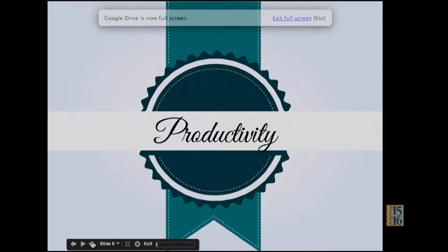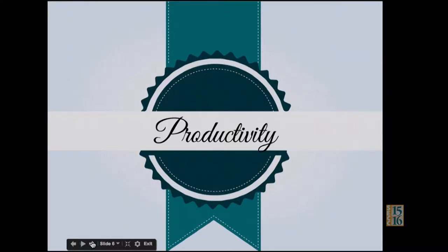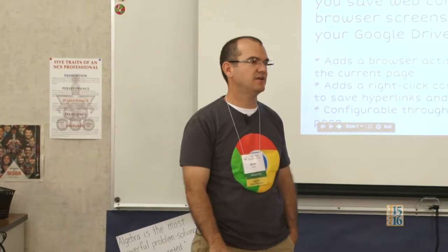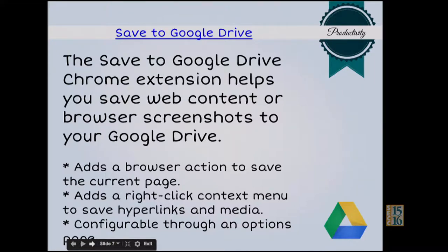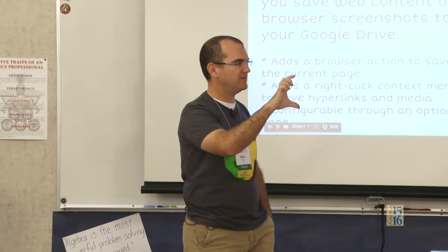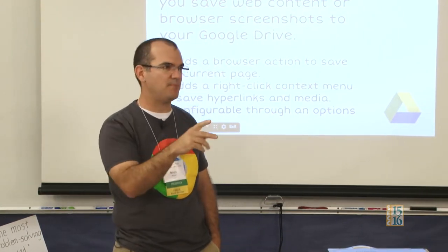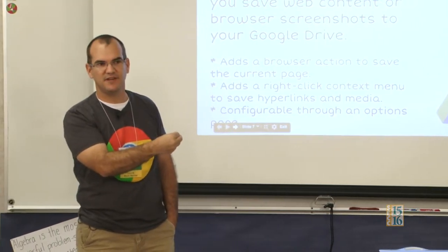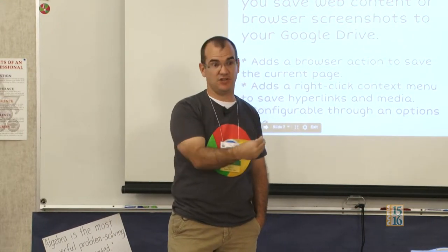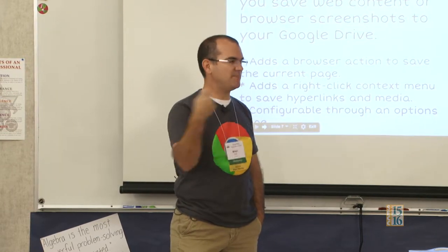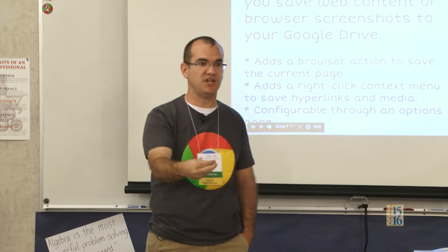I grouped the extensions in themes, so we're going to do productivity first. Save to Google Drive is an awesome extension. Whenever you're on a website and you see a picture you want, you can right-click that picture and if you have this installed, the menu will say Save to Google Drive. It will save that image into your Google Drive when you're logged in, instead of copying and saving it to your desktop. This is great for students because if they're saving to Google Drive and building presentations, they can grab those images from their Drive.